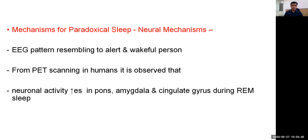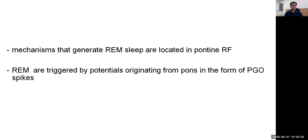Regarding the neural mechanism involved in paradoxical sleep: the EEG pattern resembles that of an alert and wakeful person. From PET scans in humans, it is observed that neuronal activity increases in the pons, amygdala, and cingulate gyrus during this type of sleep. The mechanisms that generate REM sleep are located in the pontine reticular formation, and REM is triggered by potentials originating from the pons in the form of pontogeniculo-occipital spikes.